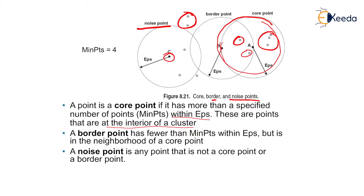Border points have fewer than the minimum points within eps, but are in the neighborhood of a core point. Noise points are any point that is not a core point or a border point — they are outside the cluster.